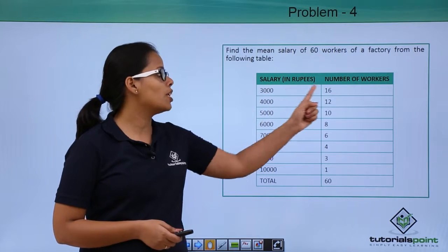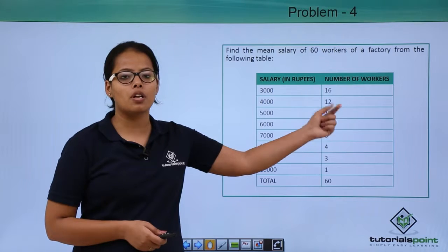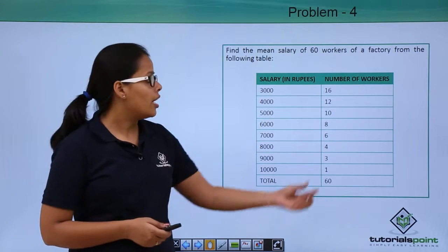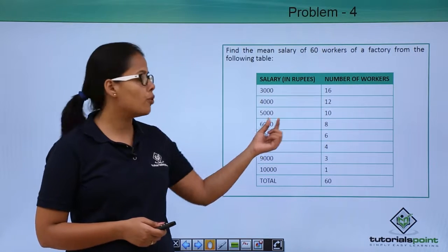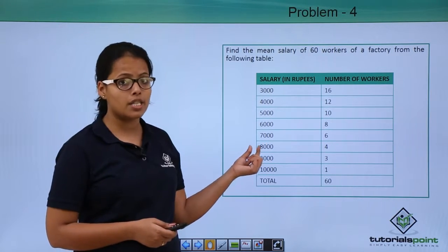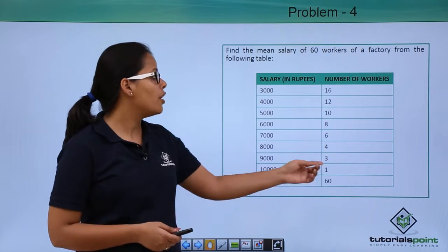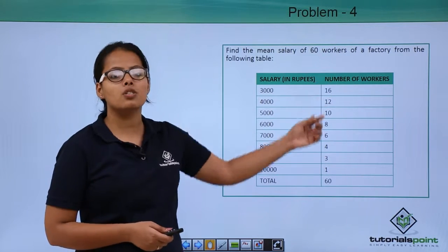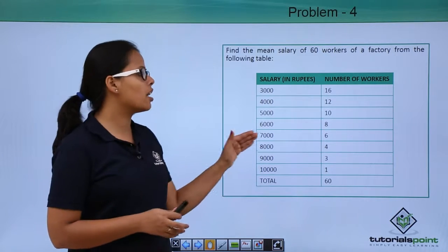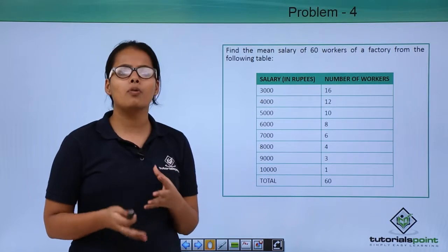The salary data shows 16 workers earning 3000 rupees, 12 workers earning 4000, 10 workers earning 5000, 8 workers earning 6000, and so on. When you sum all these workers, you get 60 total workers with varied salaries from one worker to the other.